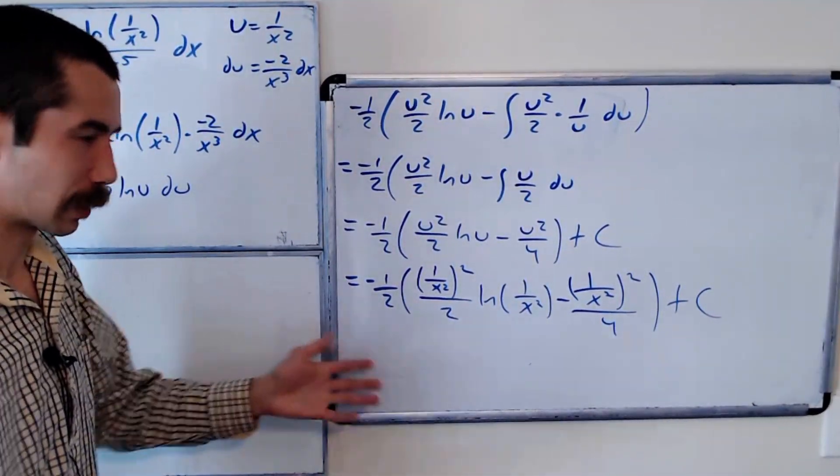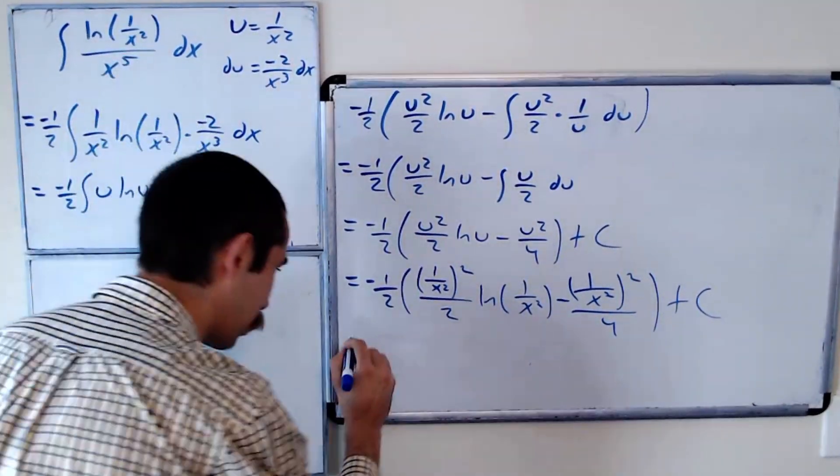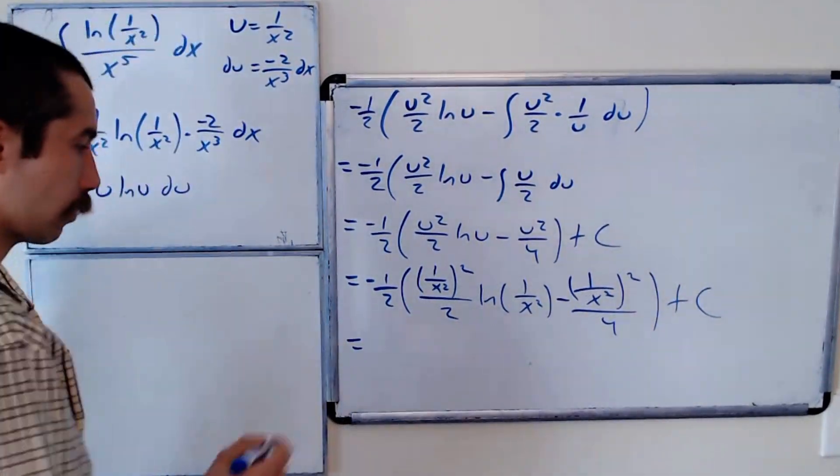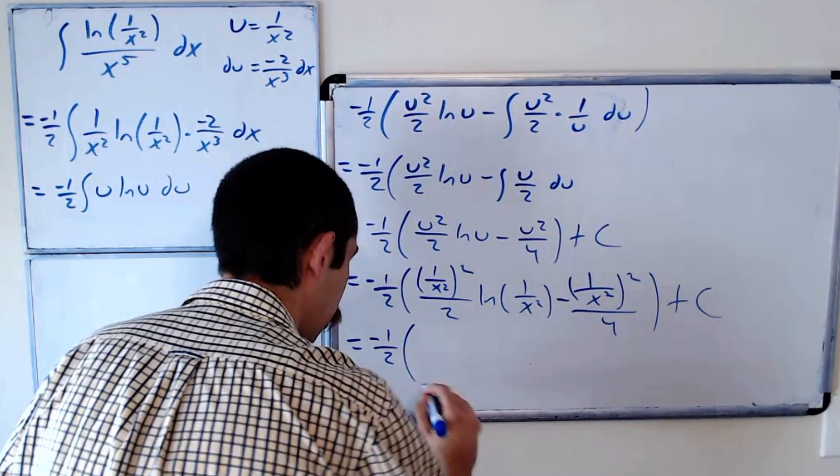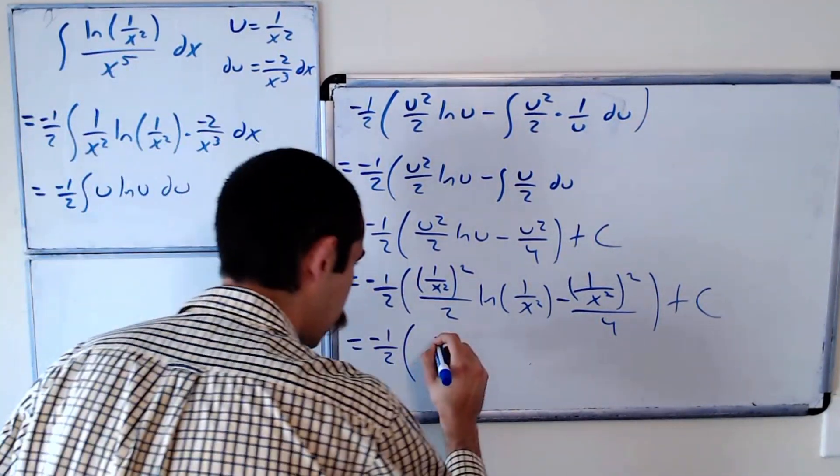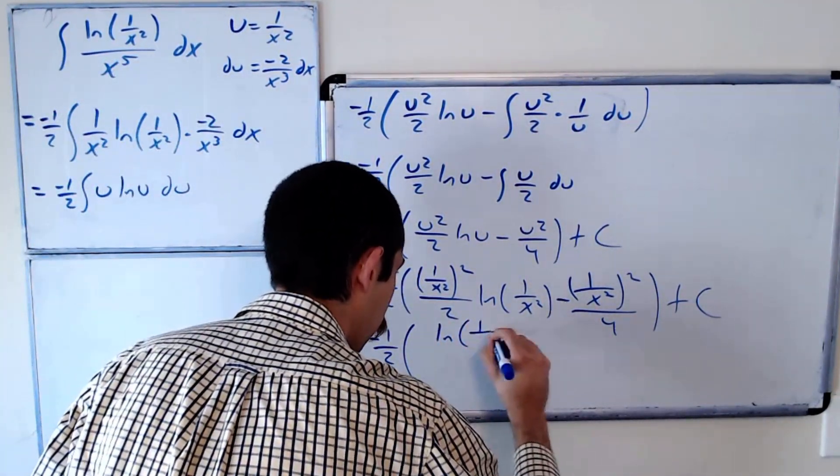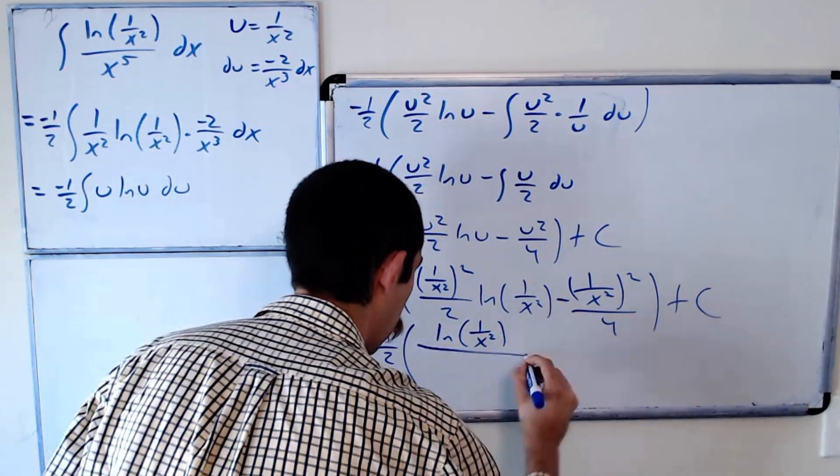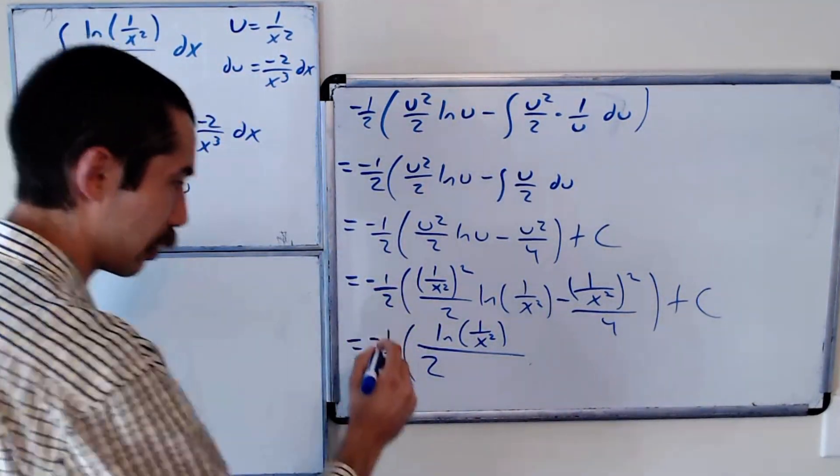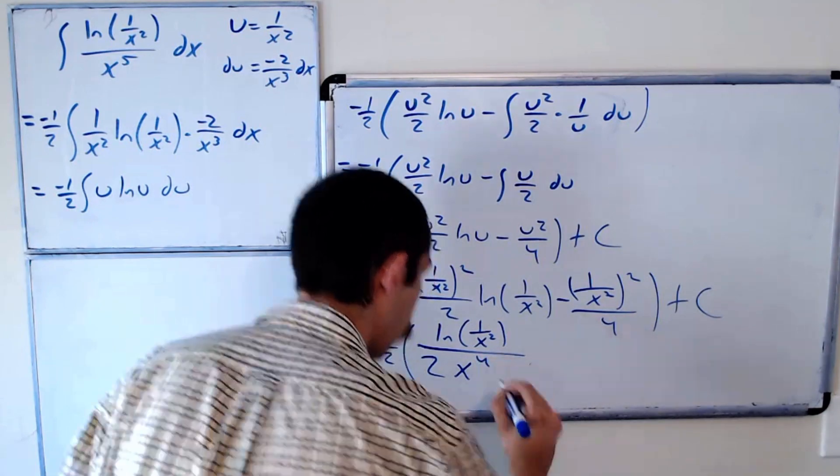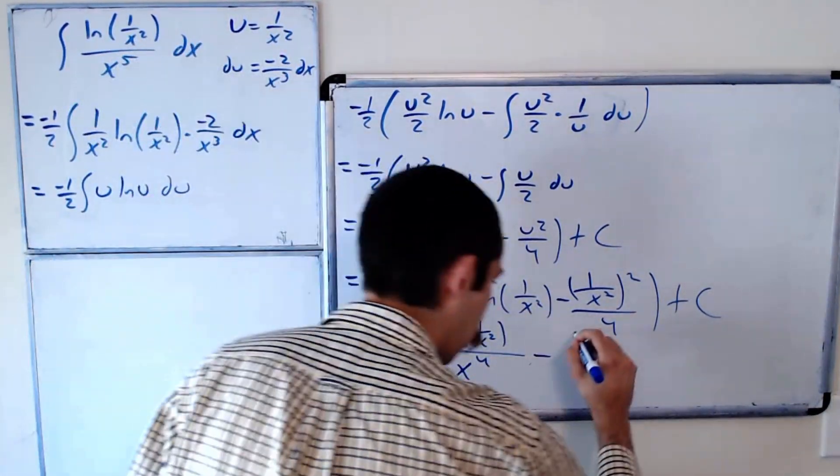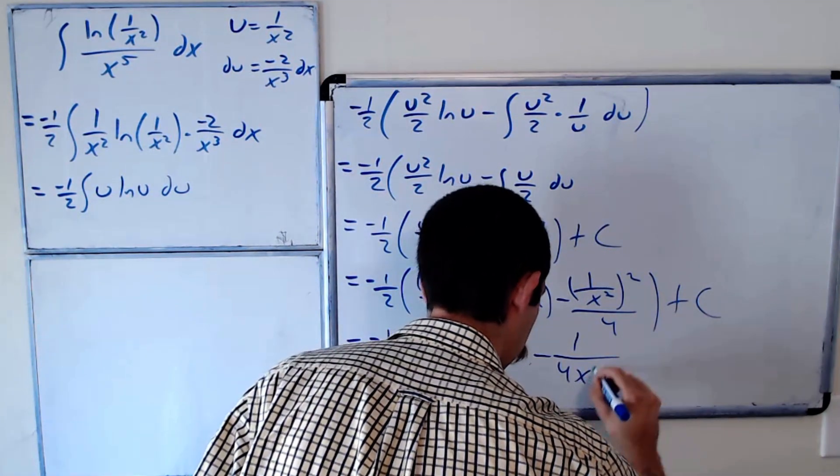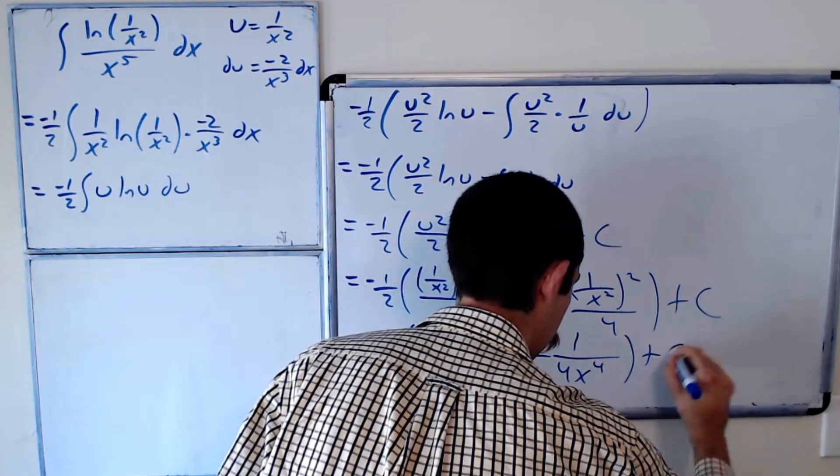So we get this as our expression, but we could clean it up a little bit. So let's just leave the negative 1 half on the outside. We're left with ln of 1 over x squared over 2 x to the fourth. Minus 1 over 4 x to the fourth, plus c.